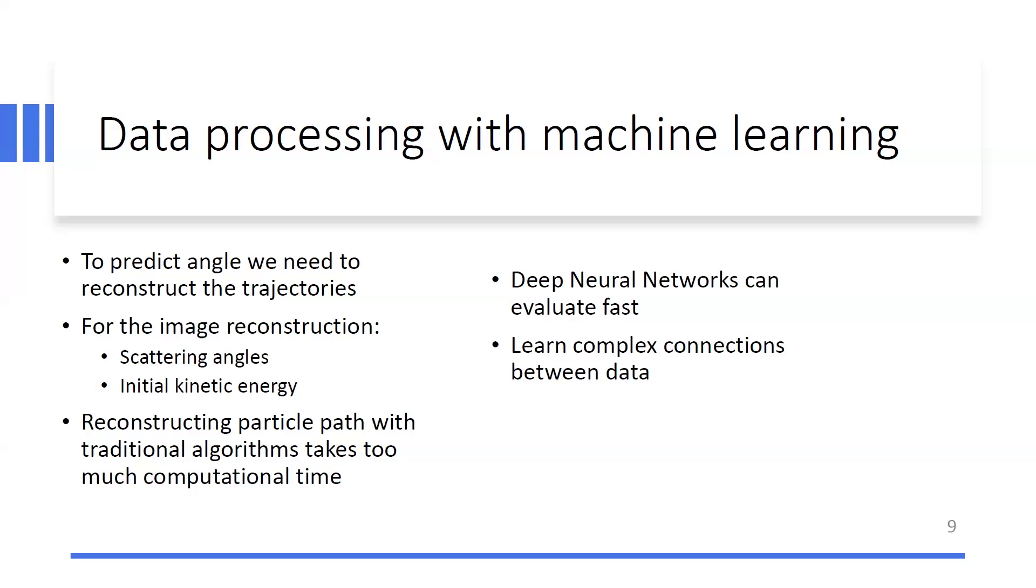As for the reconstruction part, what we need to produce for Jofi to be able to do her reconstruction, we need to gain the scattering angle of the particles and also the initial kinetic energy of this particle. And then we are able to continue with the image reconstruction. But for that, we need to match these particle trajectories and we need to do it correctly.